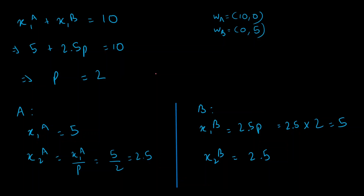Now all we need is to find the equilibrium price. From the Edgeworth box analysis, in equilibrium both agents together must consume all goods available. A's endowment is (10, 0) and B's is (0, 5), so the total supply of good one is 10 and the total supply of good two is 5. We found demand functions for both agents: x1a, x2a for A, and x1b, x2b for B.